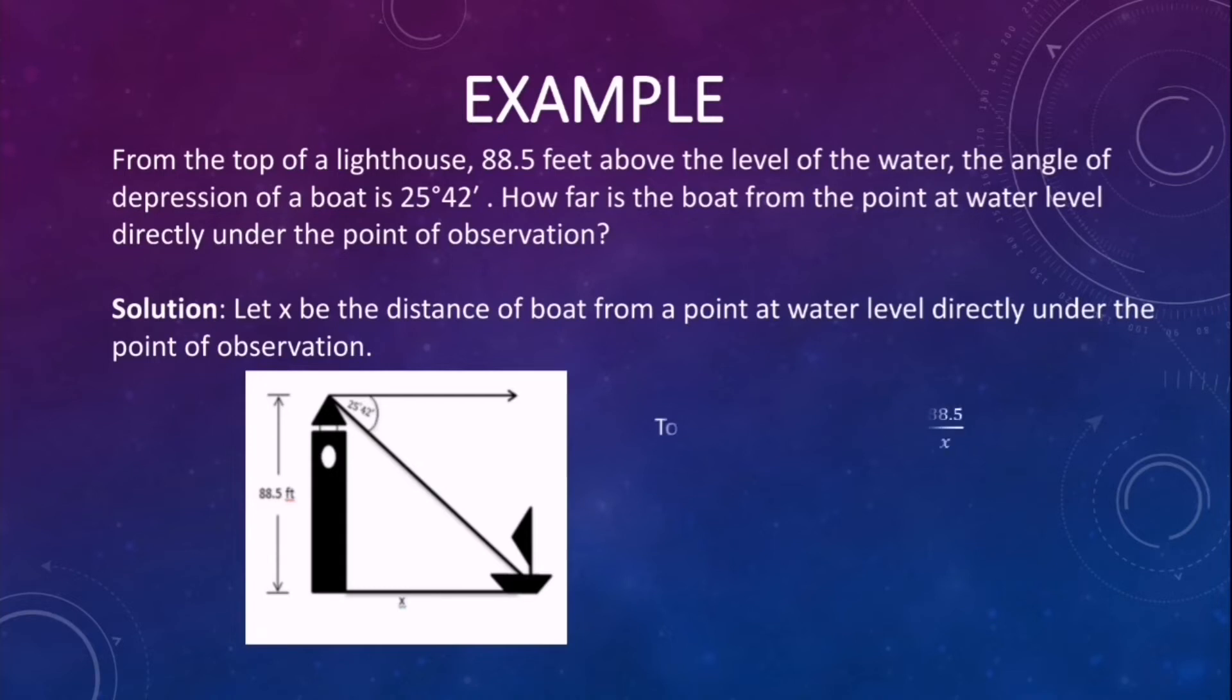To find x, use tan 25 degrees and 42 minutes equals opposite over adjacent. Since the opposite side is already given, which is 88.5 feet, now you will find the adjacent side which is the x.